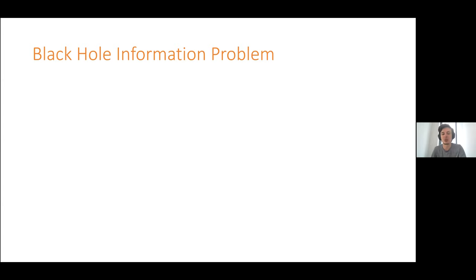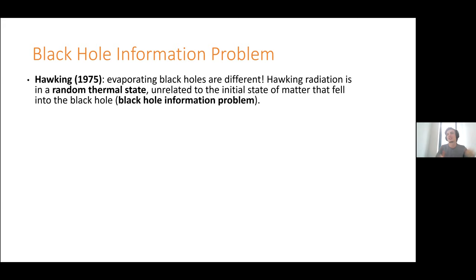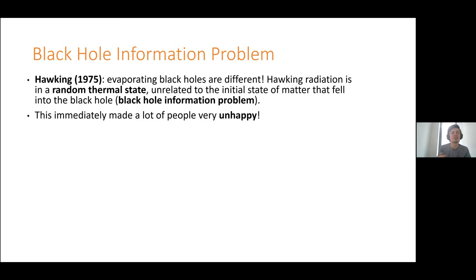But in 1975, Hawking claimed something very weird. He claimed that evaporating black holes — black holes allowed to just sit in empty space and radiate like a lump of hot coal — are very different. He claimed such a black hole would eventually completely evaporate into what's called Hawking radiation, but that Hawking radiation would just be in a random thermal state that had nothing to do with the initial state of the matter that fell into the black hole. This is completely different from ordinary unitary time evolution in quantum mechanics — some sort of fundamentally stochastic process.